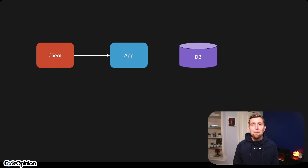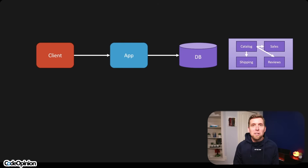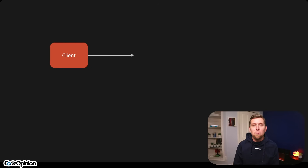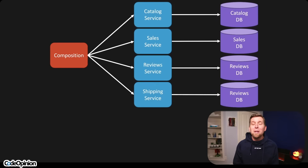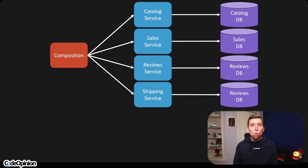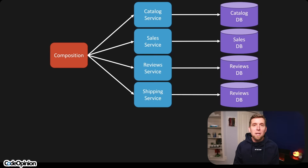What developers generally want is to make this as simple as possible — that request comes in, they want to have all the data in their local database available to them, within their own local boundary, without needing to call out to another service. But it's not that simple, because now we need to make multiple calls: to the catalog service for the name and description, sales for pricing, reviews for ratings, and shipping for delivery information.